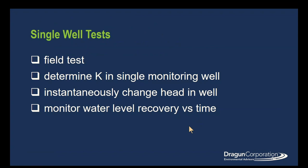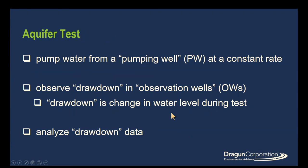If we go to the field, we can use single well tests or aquifer tests. In a single well test, you change the water level in a single well and watch how quickly it returns to equilibrium — the rate at which it returns is a function of hydraulic conductivity. In an aquifer test, we look at a number of wells over a larger area. We pump water from one well and observe water level changes in wells that may be 10 meters, 30 meters, and so on away from the pumping well. You analyze that data to get properties of the aquifer.